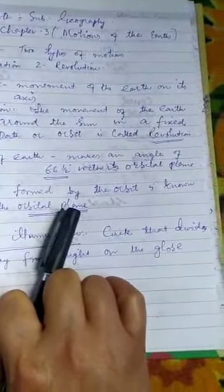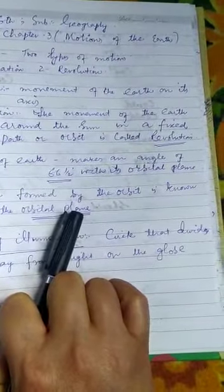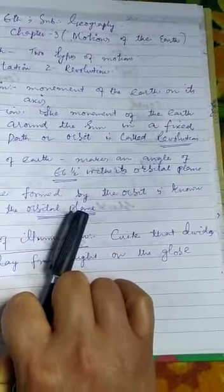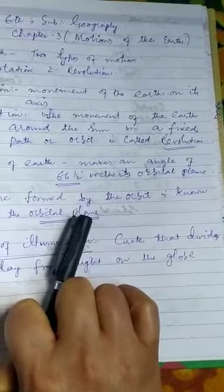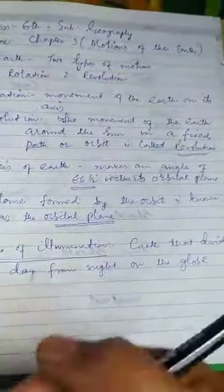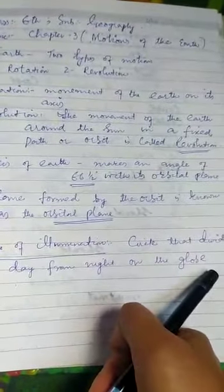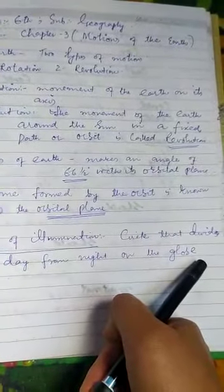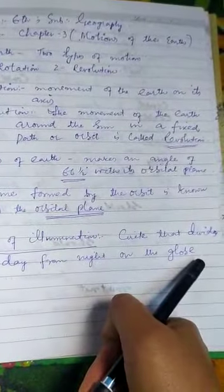The earth is spherical in shape and gets light from the sun. The part that faces the sun is the day.